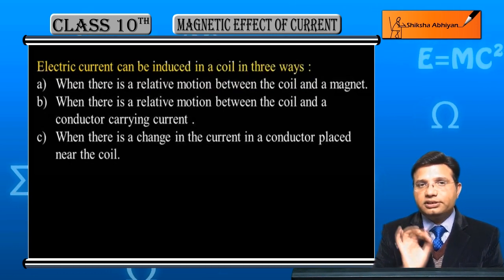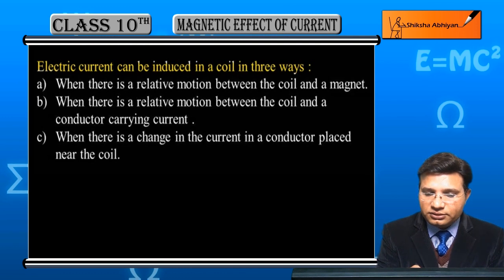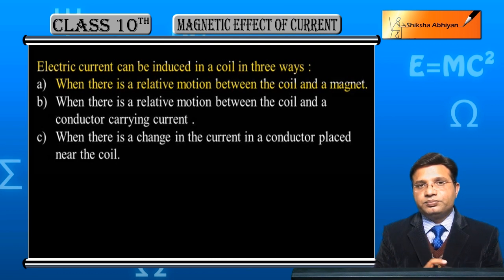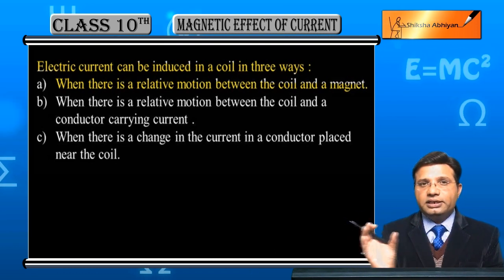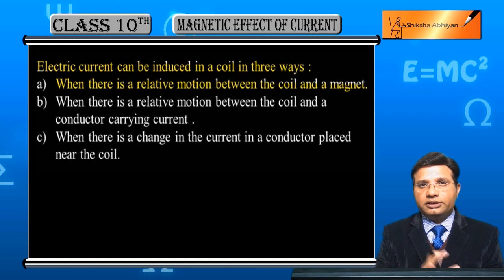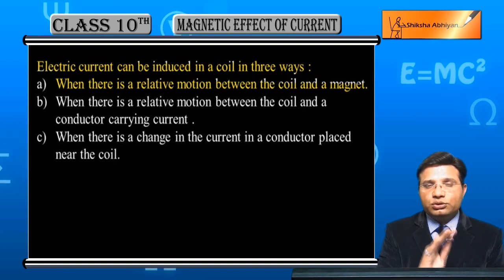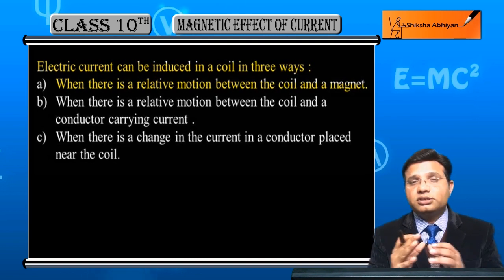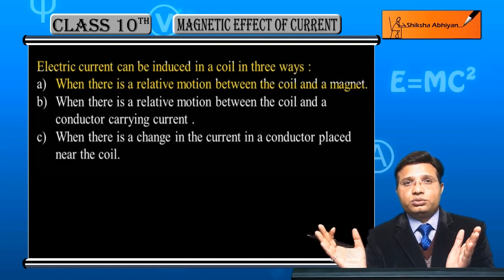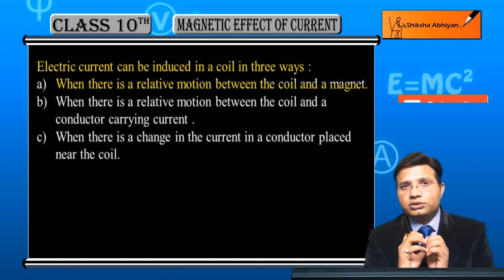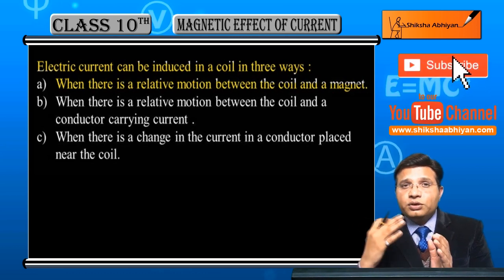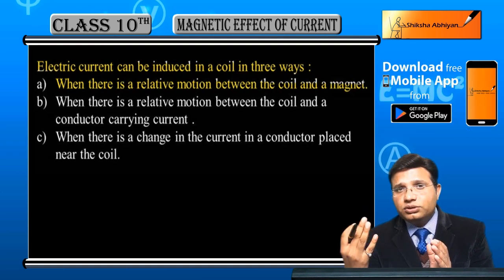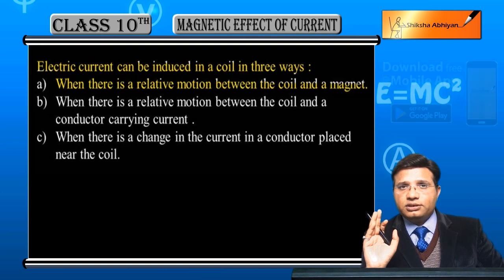First is when there is a relative motion between the coil and the magnet. उस coil को लेंगे और एक magnet लेंगे, इनके बीच में relative motion set up करेंगे — या तो coil magnet की तरफ move कर रहा है, या magnet coil की तरफ, या दोनों एक दूसरे से separate हो रहे हैं। इससे magnetic flux change होगा और coil में induced current आ जाएगी।